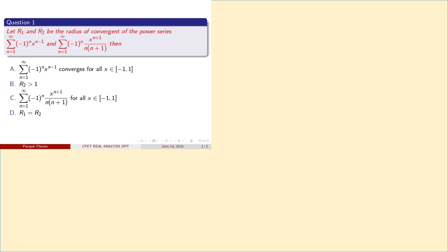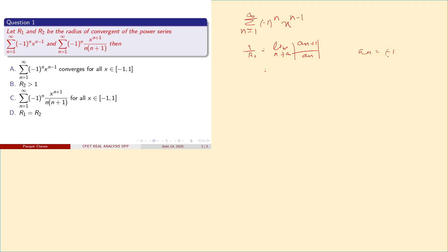We discuss the first series: summation n=1 to infinity of (-1)^n · x^(n-1). The radius of convergence: 1/R1 = limit as n→∞ of |(-1)^n / (-1)^n| = 1. So R1 is equal to 1. For this series, the radius of convergence is 1.